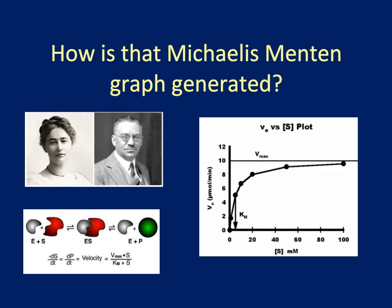This mini-lecture is focused on how to generate Michaelis-Menten graphs, such as the one in the right-hand panel. Michaelis-Menten graphs are used to extract kinetic parameters such as Km, Kcat, and catalytic efficiency.